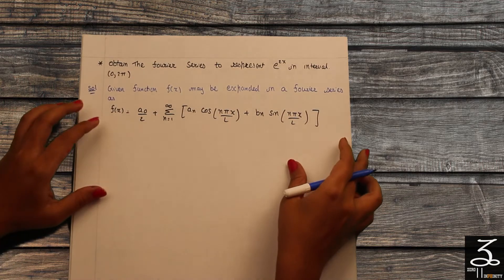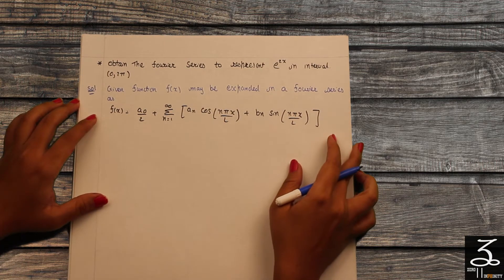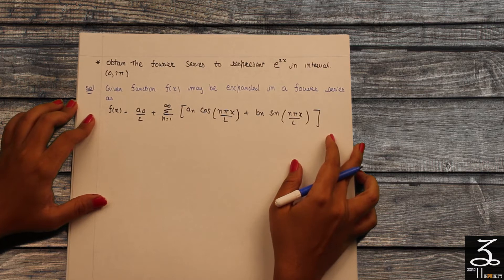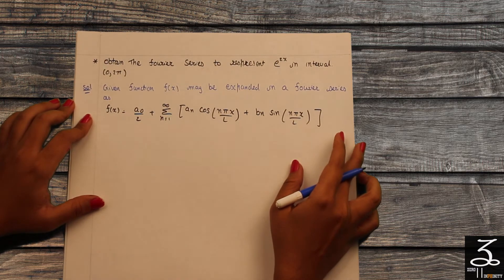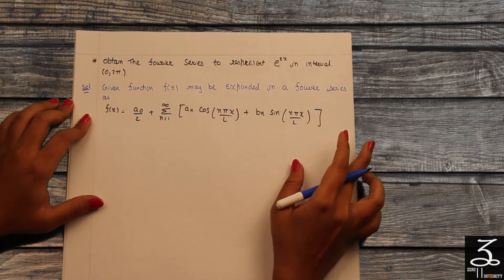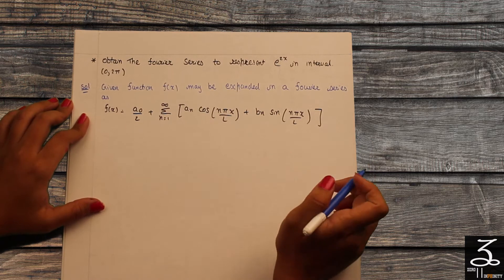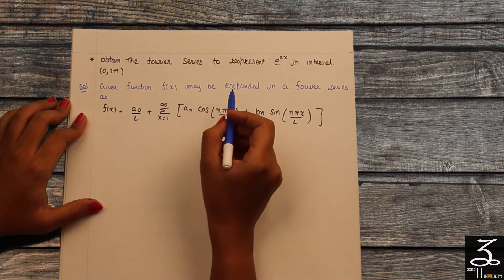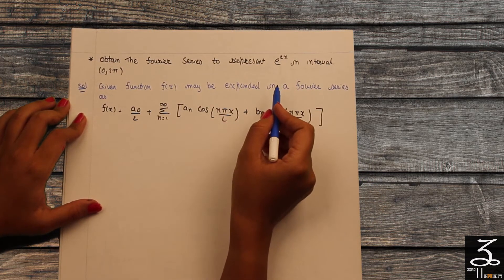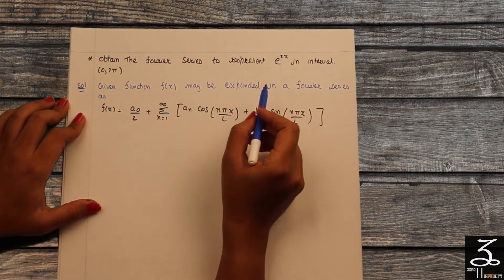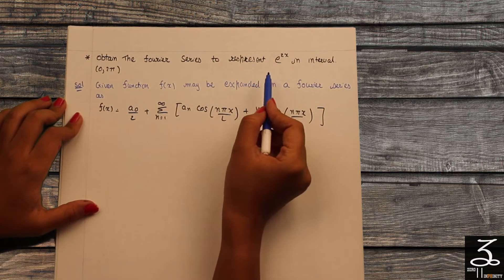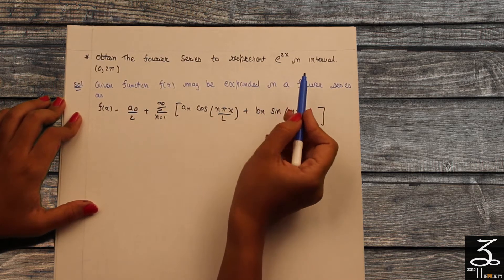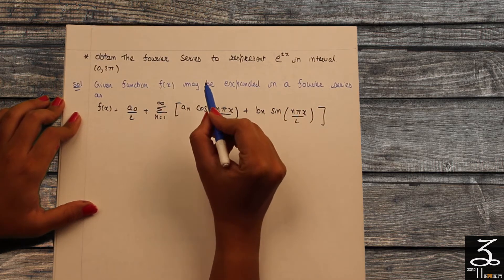Hello friends, welcome to Zifty. In the last video, we studied a Fourier series expansion of an algebraic function. Today, we are here with a Fourier series expansion of an exponential function. That is, obtain a Fourier series to represent e raised to 2x in an interval 0 to 2π.